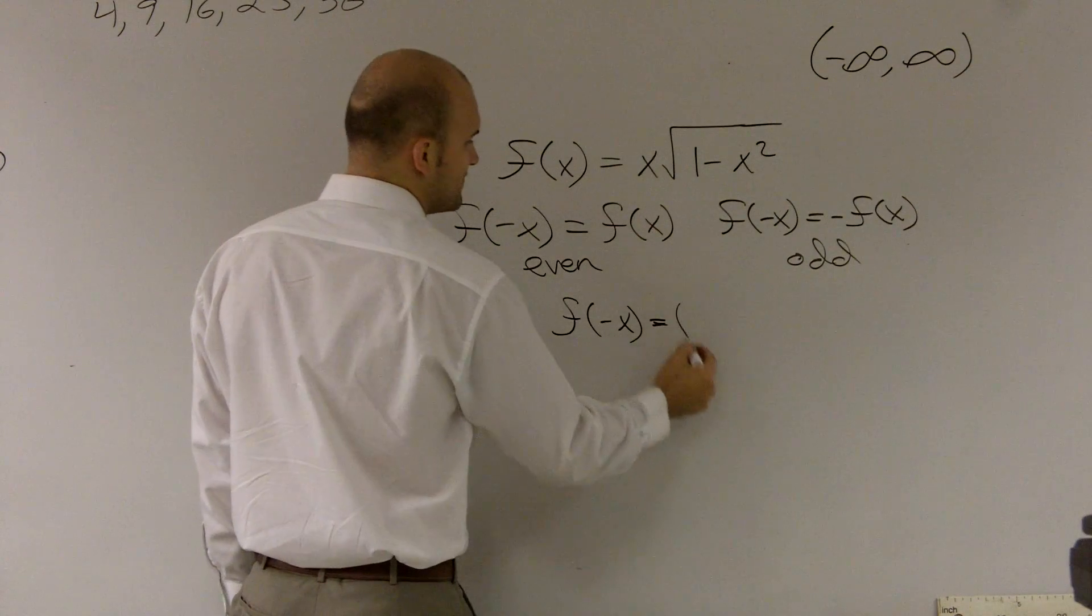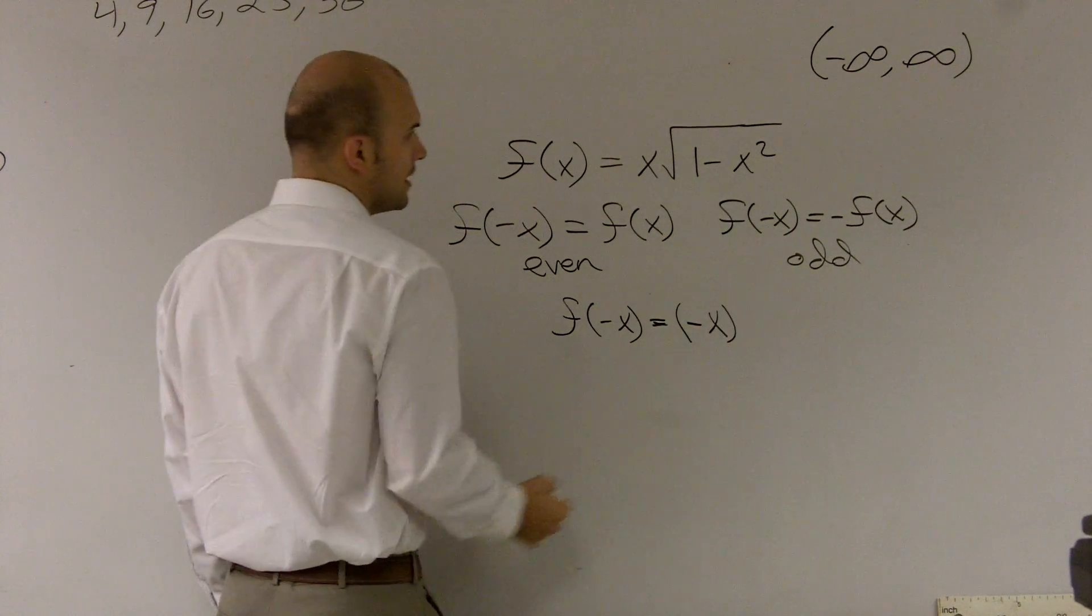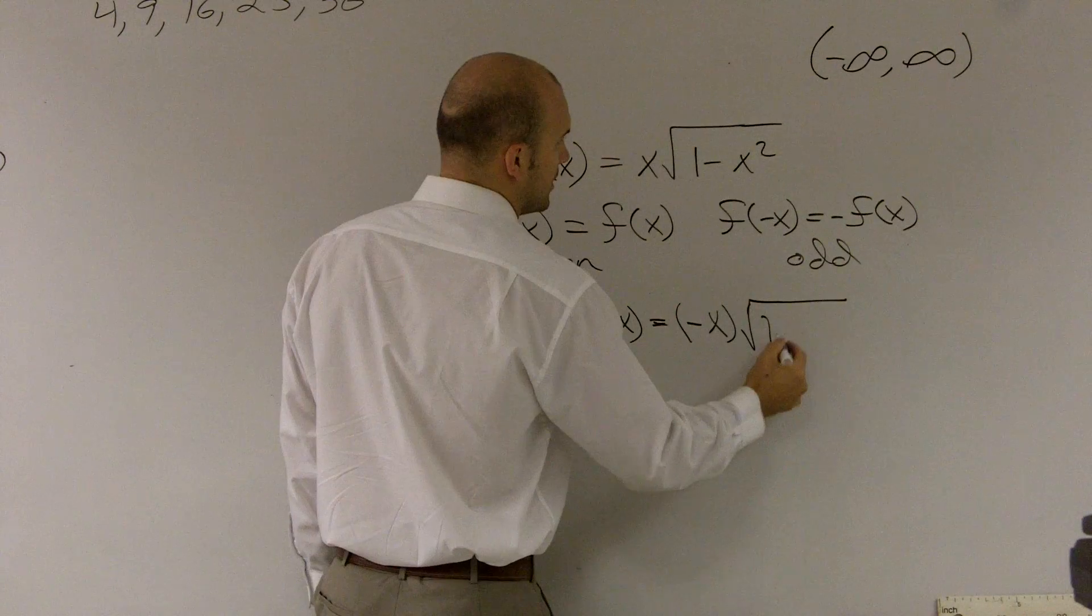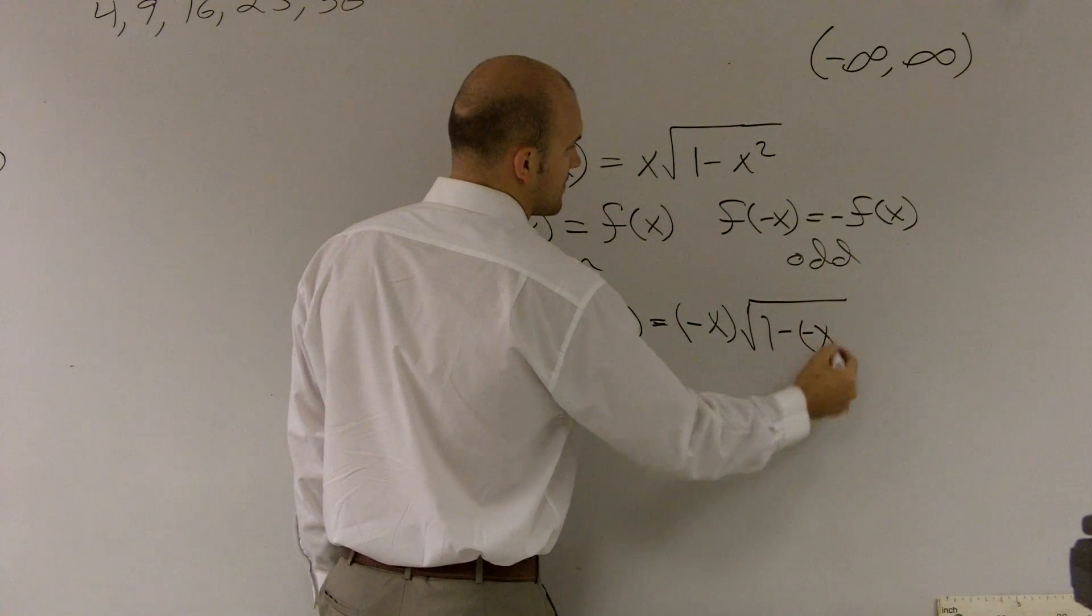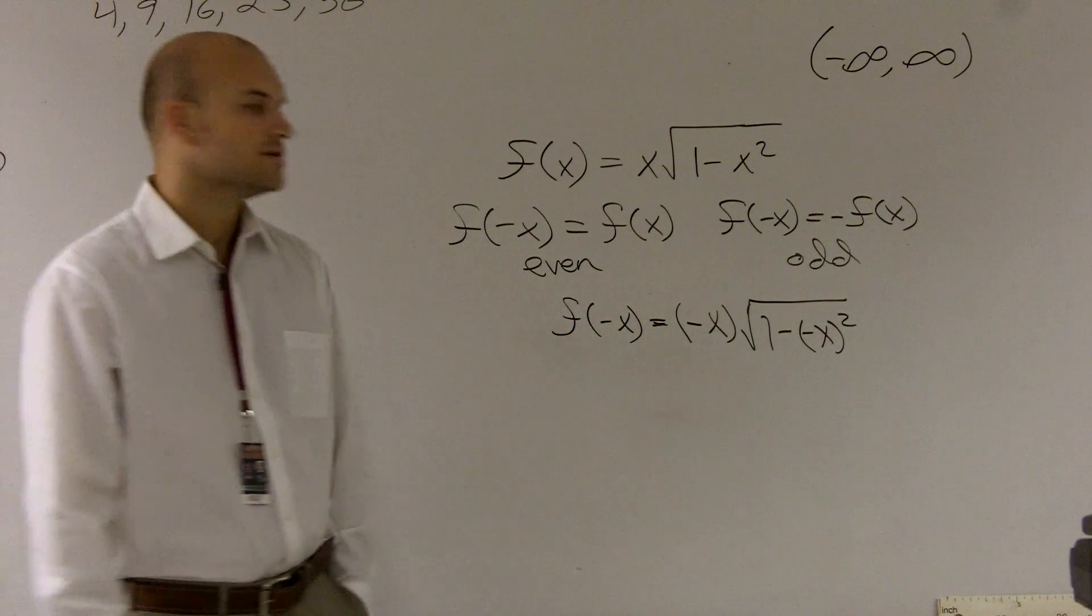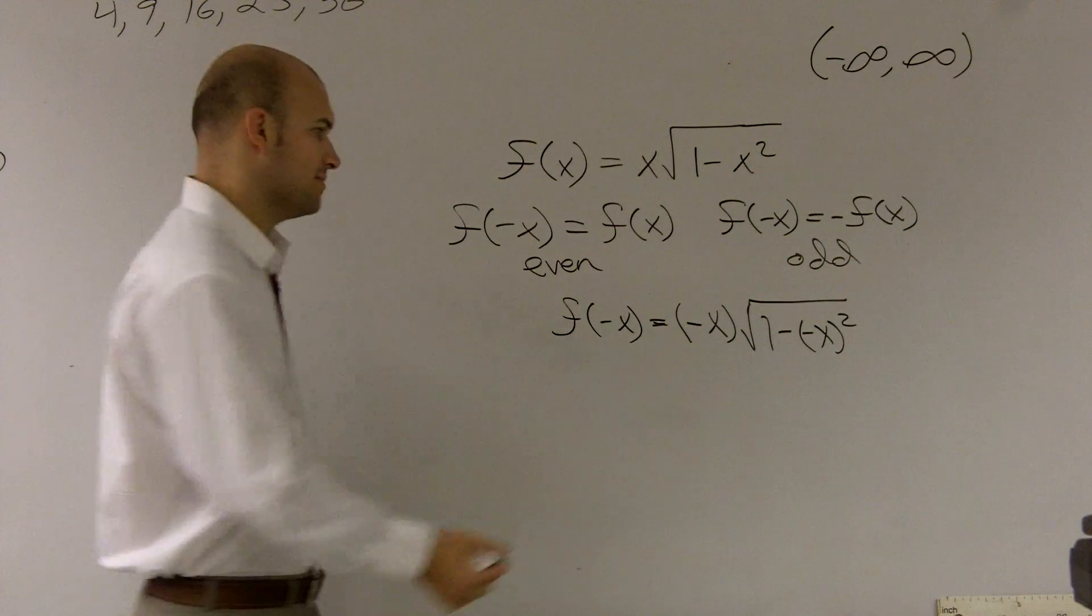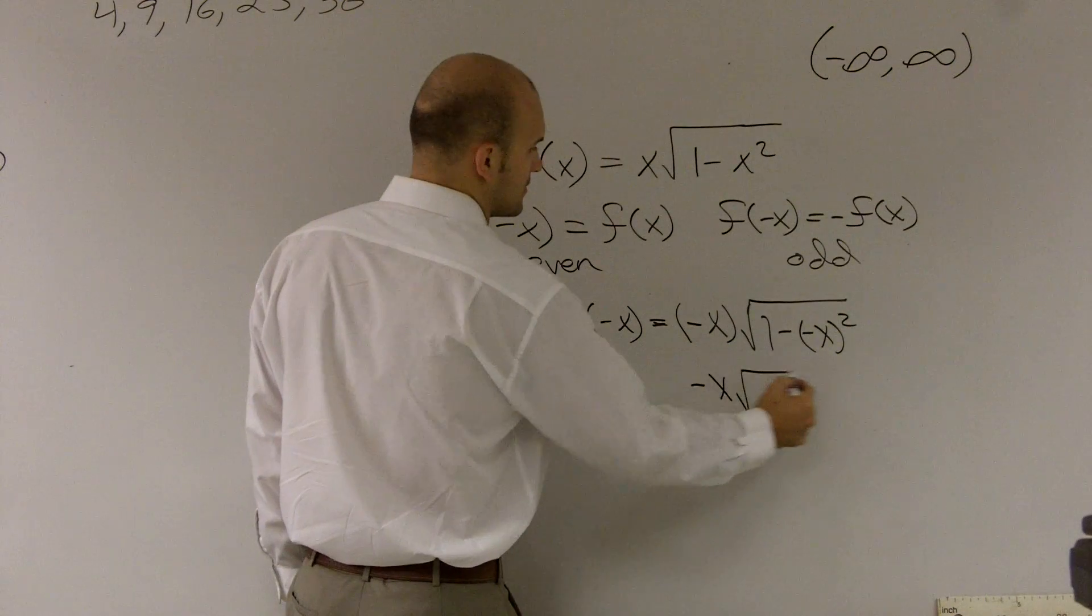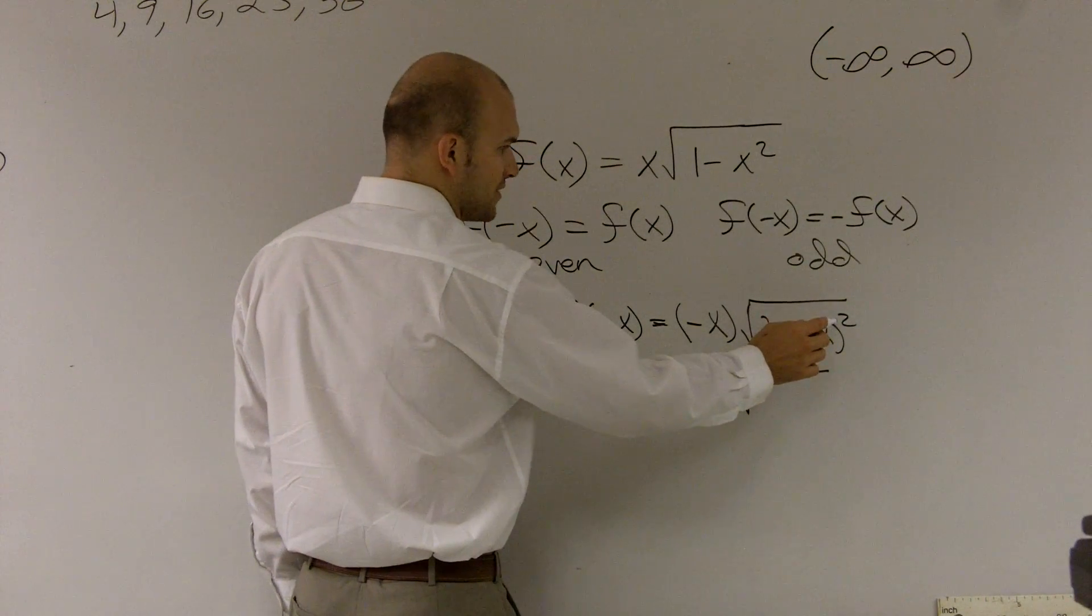So for each value, negative x, 1 minus negative x squared. So now I'm just going to simplify it a little bit. This just becomes negative x. Negative x squared is x squared.